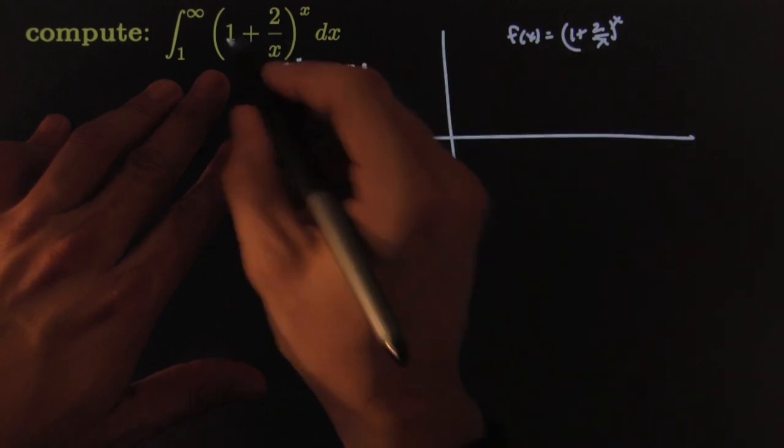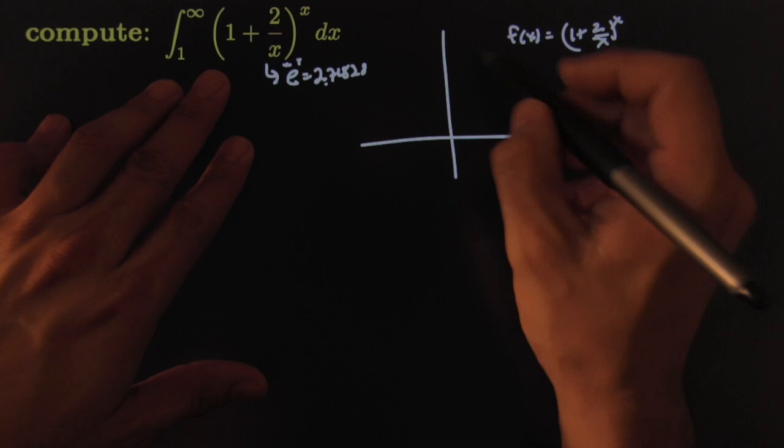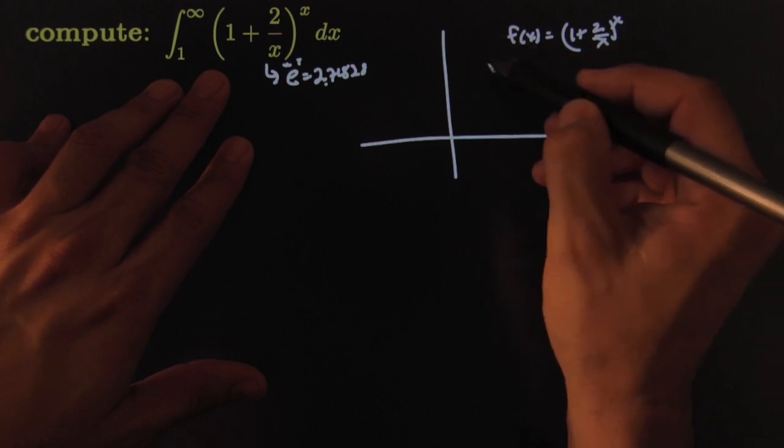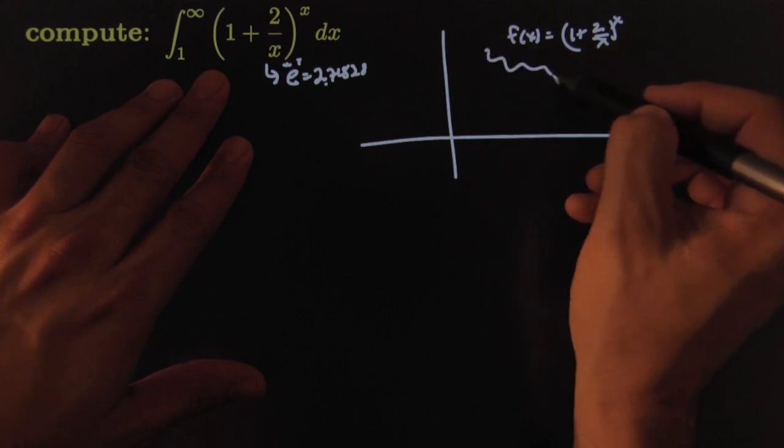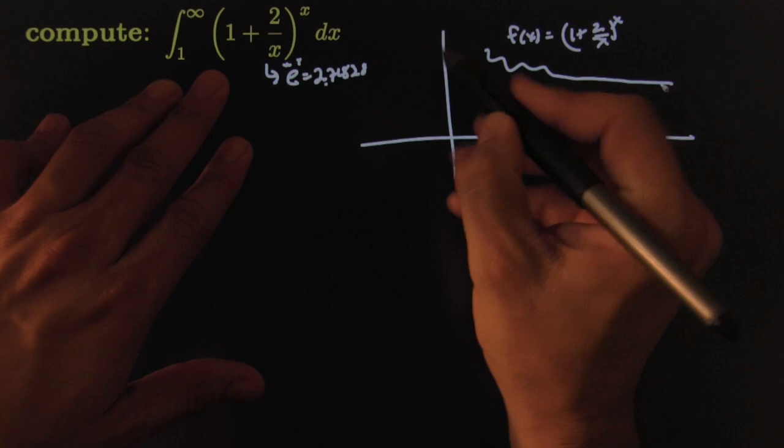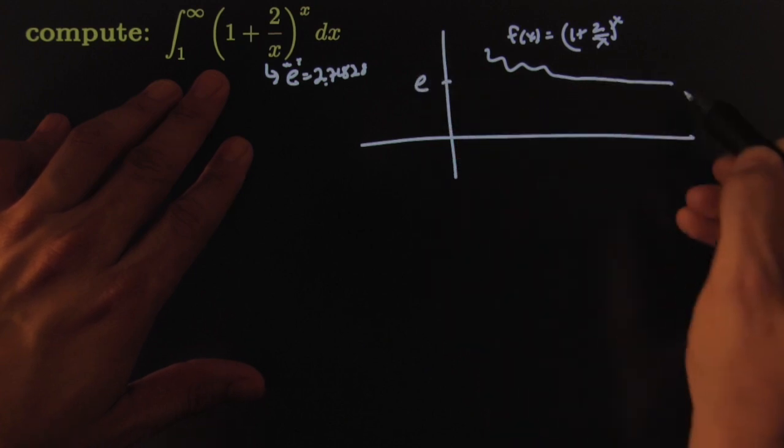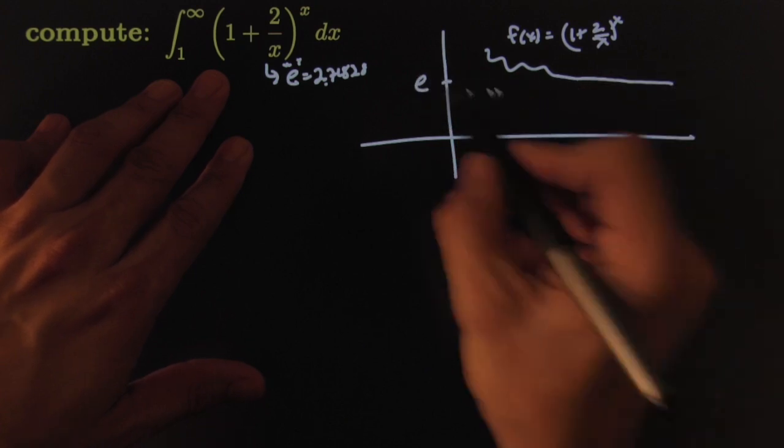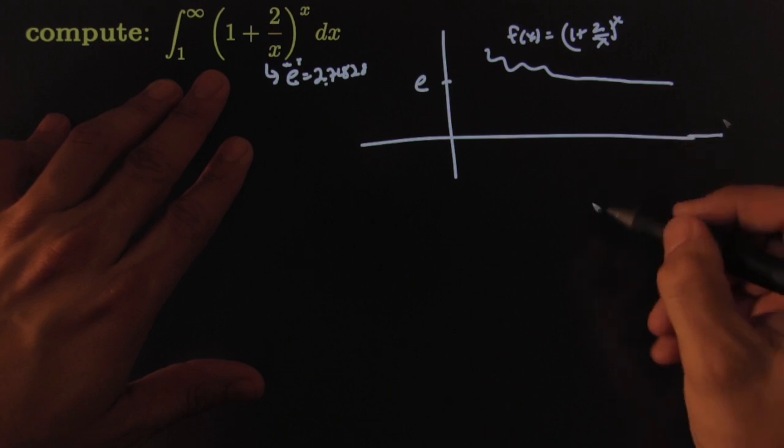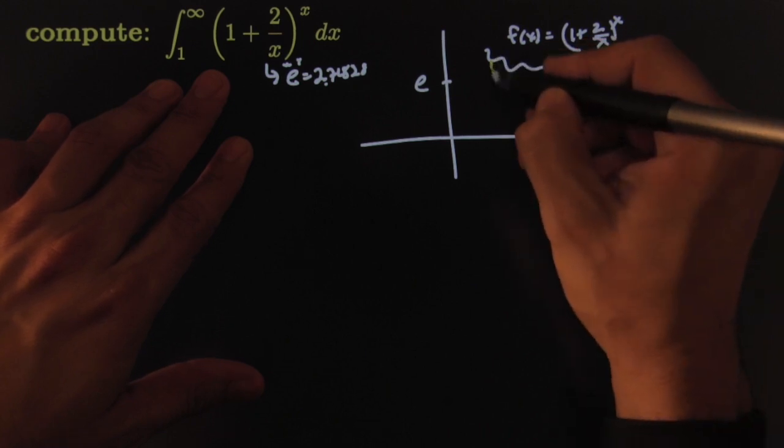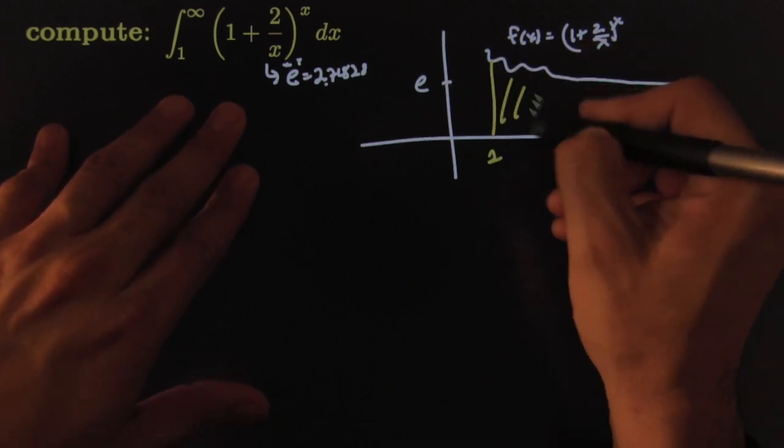And so the tail end of that integral—I don't know what happens at the beginning, something may happen there—but as it gets really far away it will exhibit a horizontal asymptote that approximates e. So what we're talking about is finding the area from 1 going all the way to infinity.